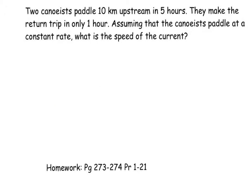In the next problem, two canoes paddle 10 km upstream in 5 hours and make the return trip in only 1 hour. Assuming the canoe is paddled at a constant rate, we need to find the speed of the current. Going against the current, we subtract the current's speed; going with the current, we add it.